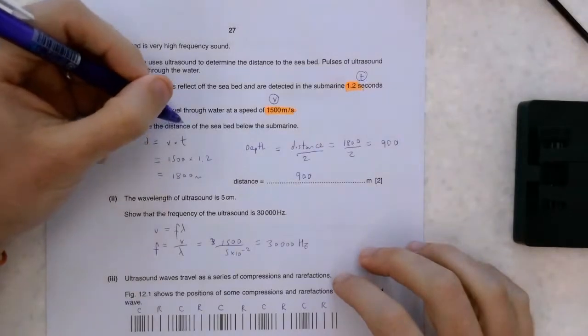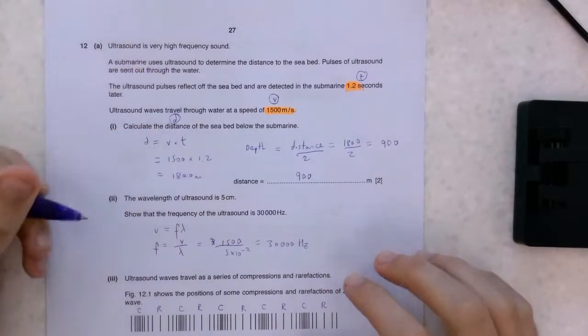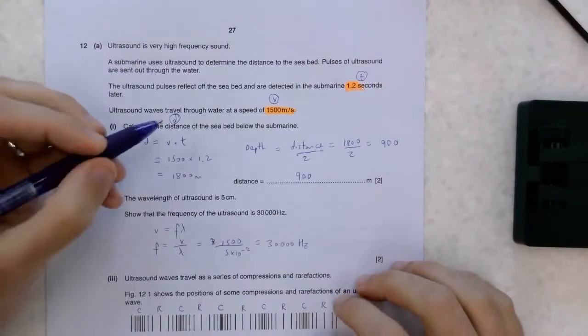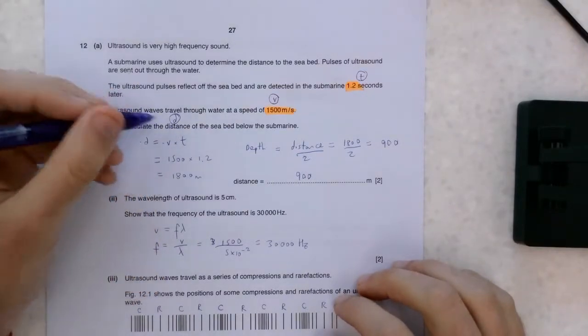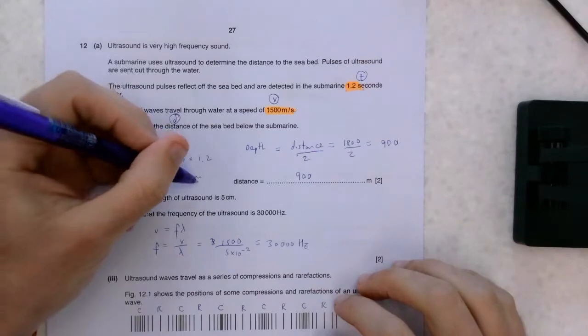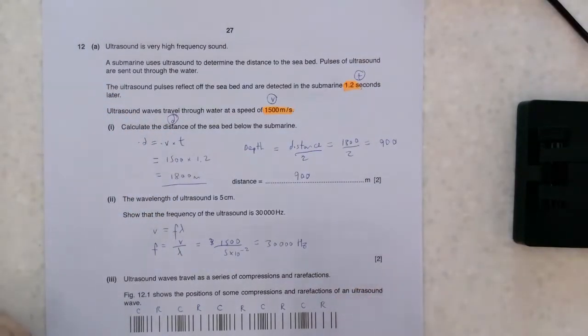And obviously, you're being asked to calculate distance, which, as we know, is just a product of time and speed. We've got 1,500 times 1.2, that's 1,800. Be careful.